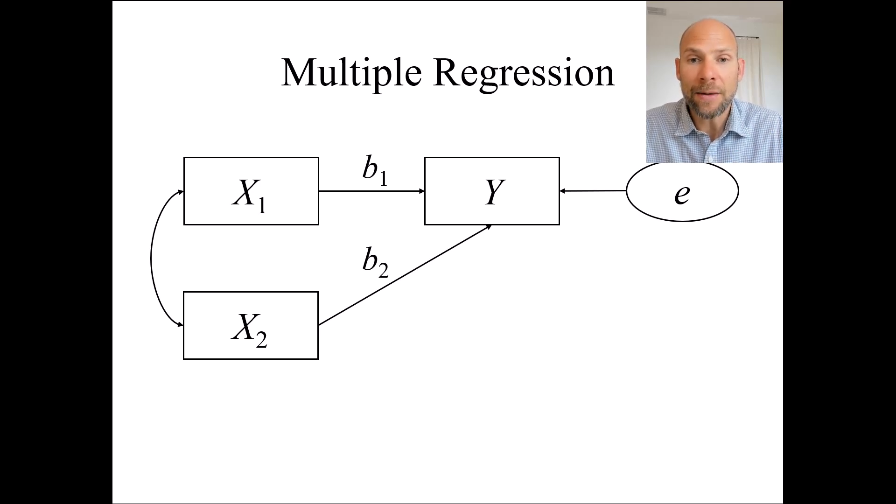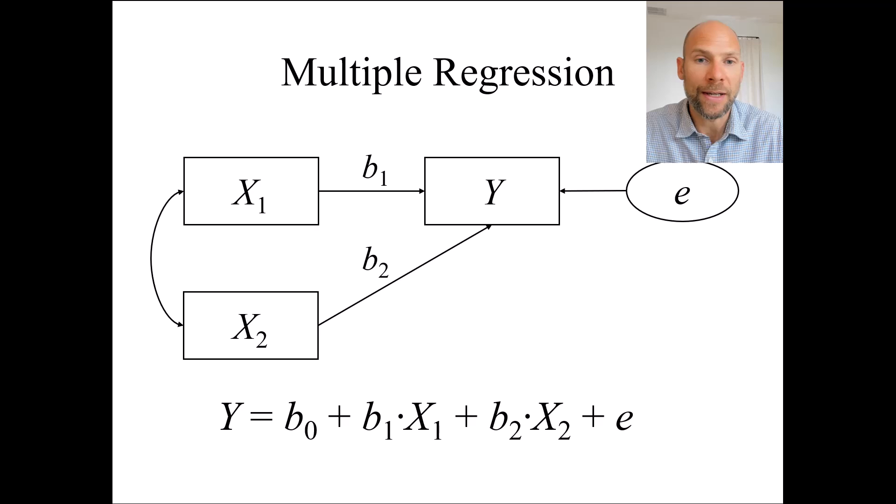This is done by fitting a linear equation which looks like this where y is on the left hand side of the equal sign and on the right hand side you have an intercept b0 which is not shown above in the path diagram. And then you have b1 times x1 as one term. So b1 is the regression coefficient or regression weight that characterizes the relationship between x1 and y when x2 is also in the model.